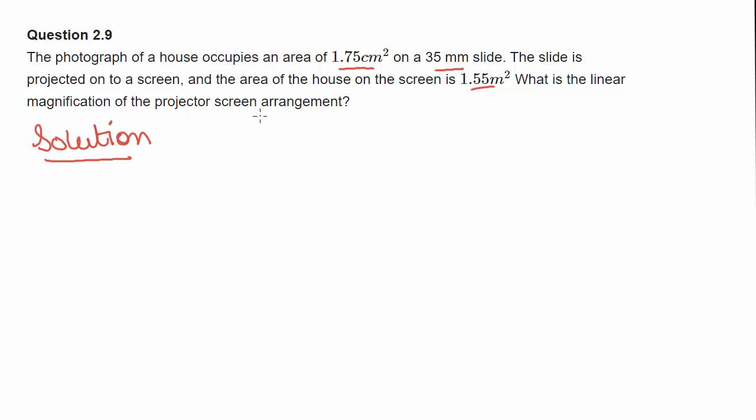It is given that area of object is equal to 1.75 cm² and area of image is equal to 1.55 m², which is equal to 1.55 times 10 to the power 4 cm².